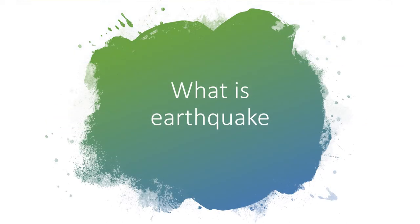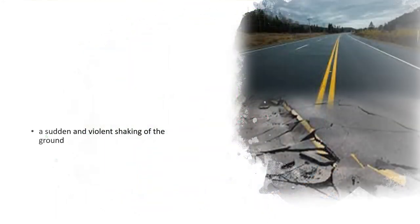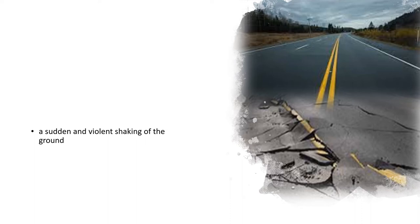What is an earthquake? An earthquake is a sudden and violent shaking of the ground. On top is a picture of a road before the earthquake, and after, you can see it's wild and destructed — an incapacitated road after the earthquake.